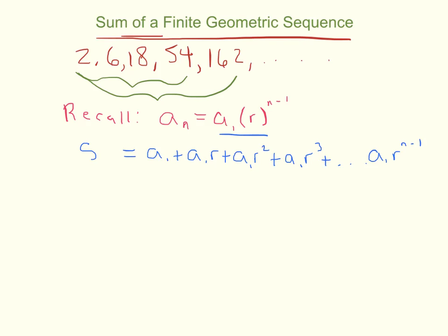I'm going to call this the sum of the first n terms, and I'm going to notate it with that little subscript Sₙ. Now, I'm going to do a little trick here. I'm going to multiply both sides of this by r.